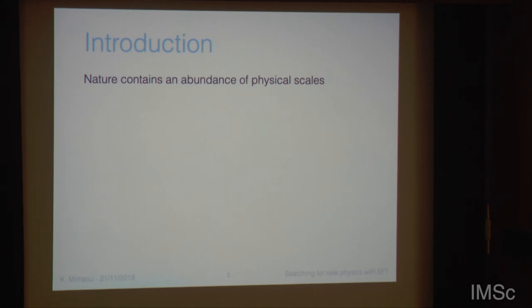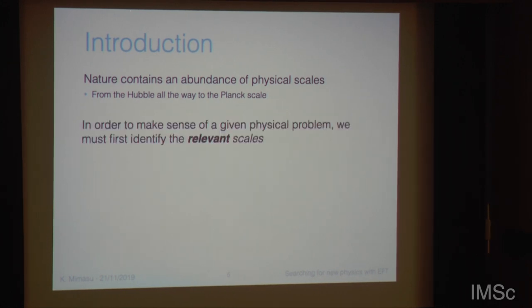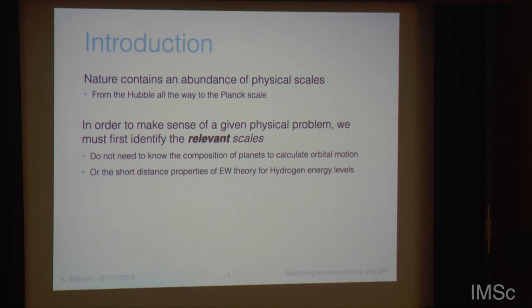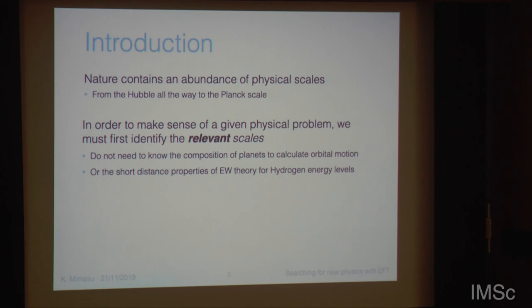So part one. The starting point is really that nature contains an abundance of physical scales, from Hubble all the way to the Planck scale. And if you want to make sense of a particular problem, then it's probably useful to identify the relevant scales involved. For example, you don't really need to know the composition of various planets in order to calculate their orbital motion around a star.